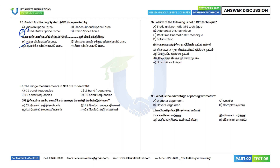Question 96: The range measurements in GPS are made with L2 band frequencies. Option B. Question 97: Which of the following is not a GPS technique? Differential GPS technique and total station — total station is not a GPS technique. Option D is the correct answer.